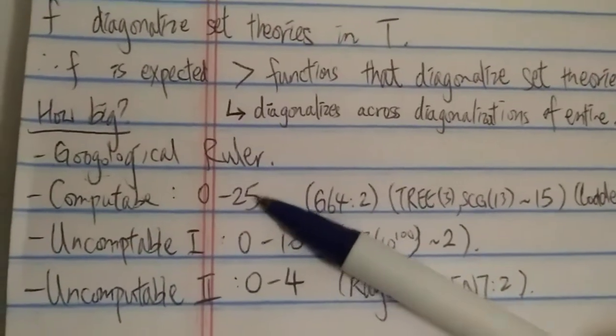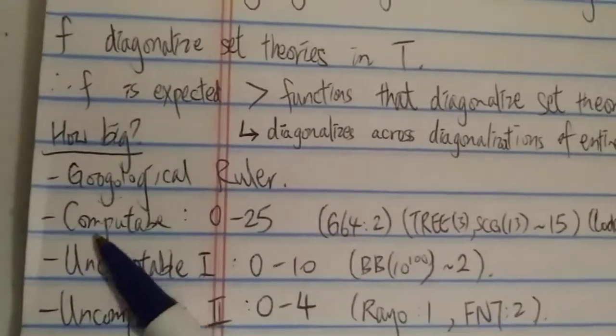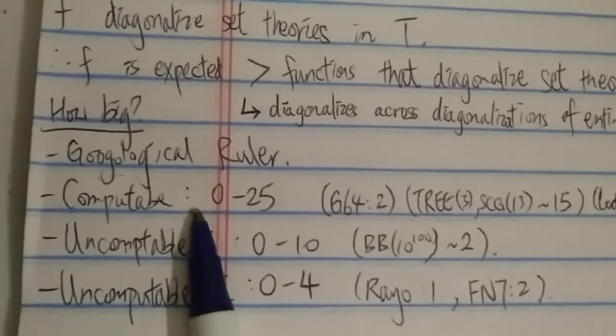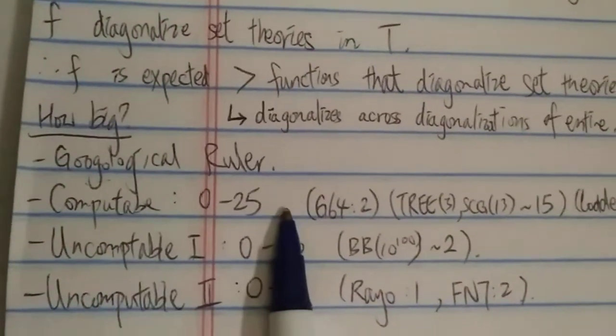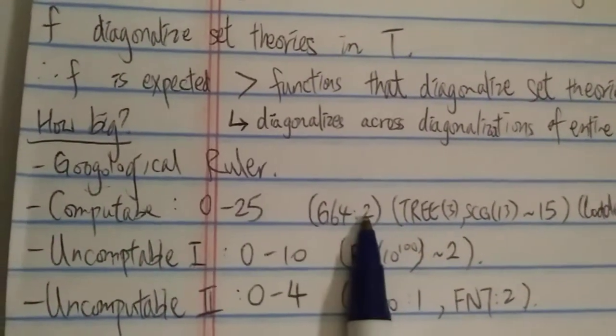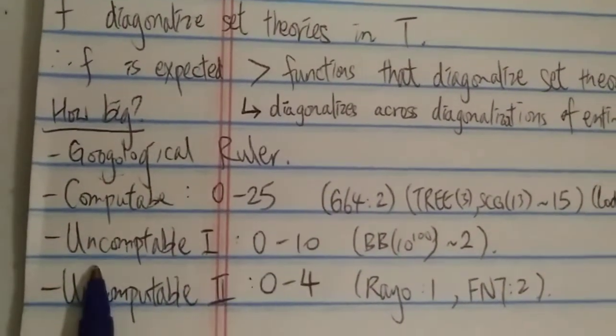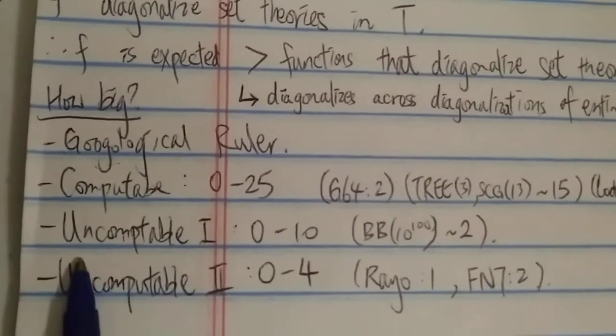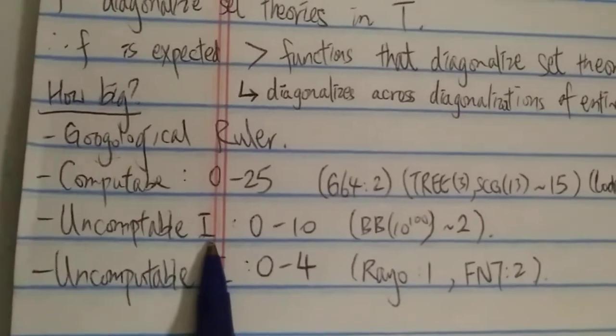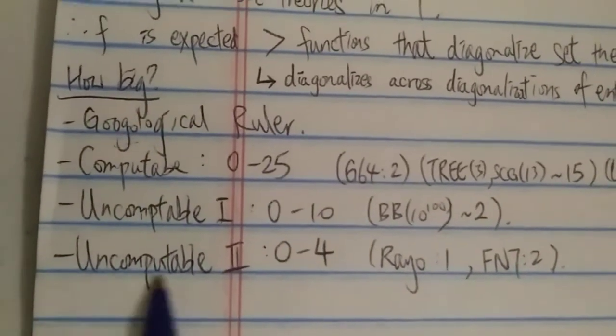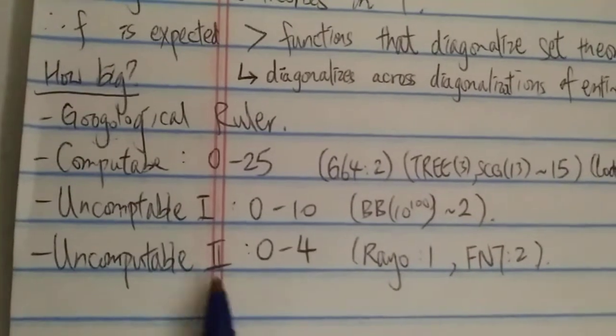So basically, there are three categories. So the first category is the computable numbers, which is sub-categorized into 25 different levels. Zero is the smallest, 25 is the biggest. And then the second category is the uncomputable one. And then the last one, the third one, is uncomputable two.